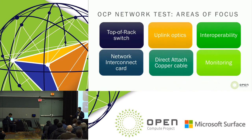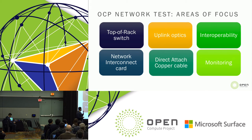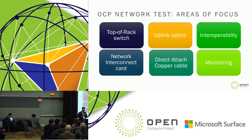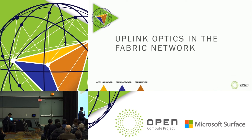All the hardware eventually ends up in our data centers and we try to control as many aspects as possible to meet our requirements. When thinking about network testing the OCP rack, especially at scale, the areas of focus from a component perspective include the top-of-rack switch, the network interconnect card connecting the server to the network, uplink optics, and direct attach cables. Interoperability at the rack level is a significant focus, as is monitoring over a hardware lifecycle of three to five years.